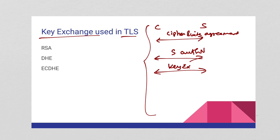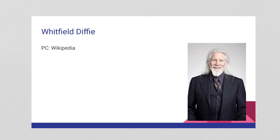The popularly used key exchange methods in TLS are RSA, DHE and ECDHE. RSA we have already covered in a past episode. Today we are going to learn about Diffie-Hellman ephemeral. But before that, I will explain what Diffie-Hellman key exchange is about. It was invented by Whitfield Diffie, one of the very popular cryptographers. I took this picture from Wikipedia, so credit goes to Wikipedia.